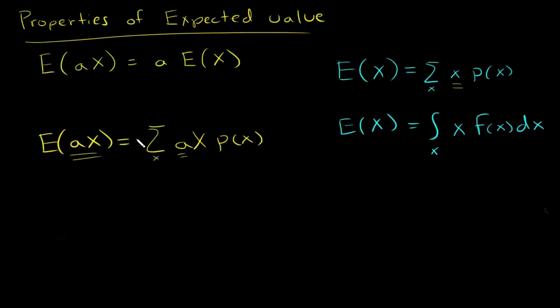I can pull it out of my sum and I'll get a times the sum over X, X times the probability mass function of X. And then we can see that this is the expected value of X, so this is a times the expected value of X. So if X is discrete, I've shown that this relationship is true.